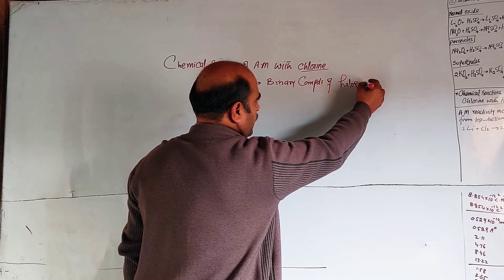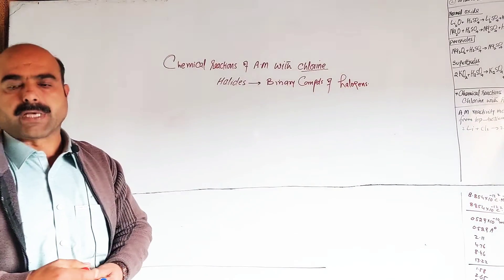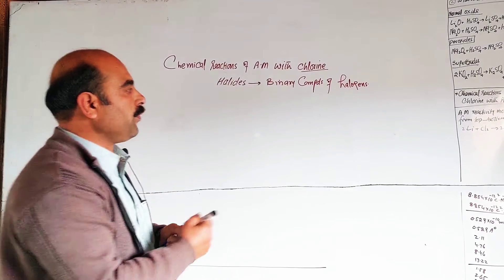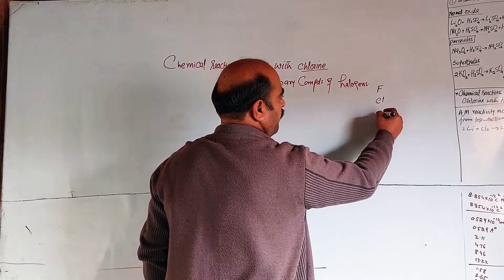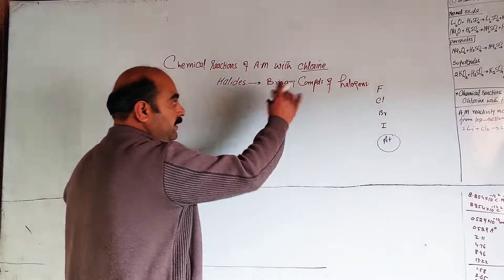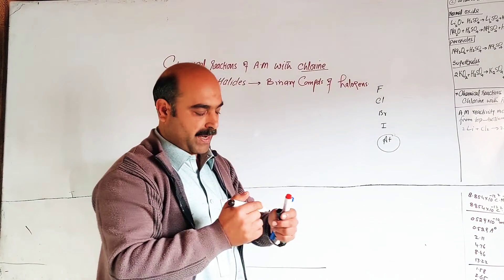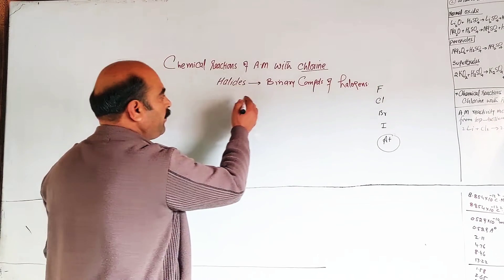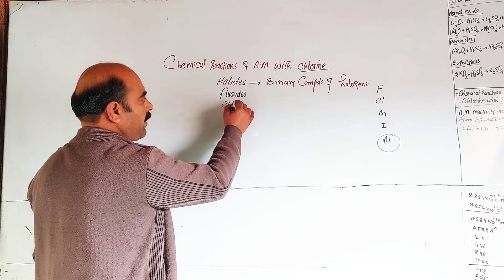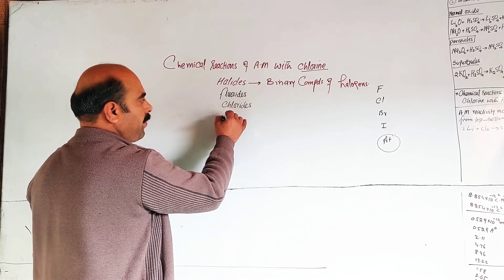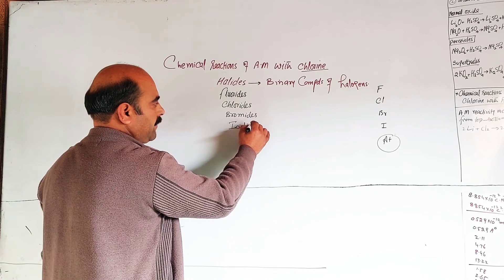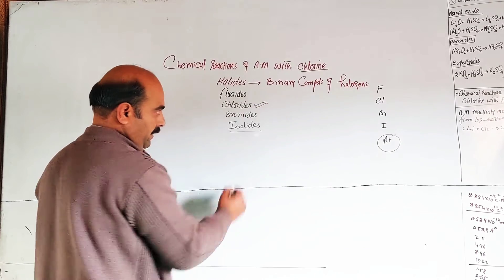These binary compounds are called halides. Halogens are the elements of Group 7A in the periodic table: fluorine, chlorine, bromine, iodine, and astatine. Binary compounds of fluorine are called fluorides, binary compounds of chlorine are called chlorides, similarly bromides and iodides.